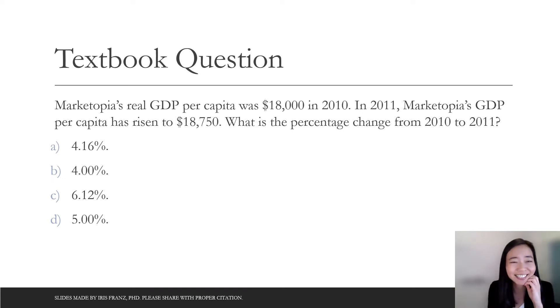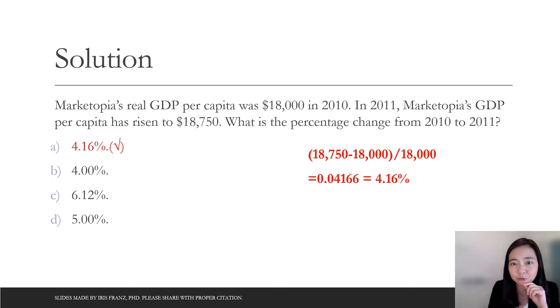Now assume you have finished that. So we use the new number $18,750 minus the old number $18,000 divided by old number $18,000. Then you're going to get the growth rate 4.16%.